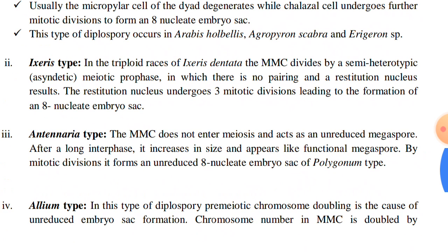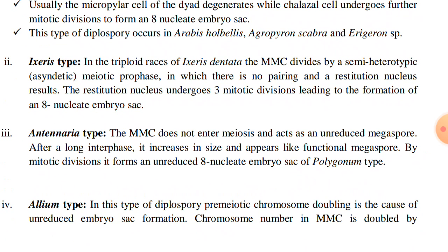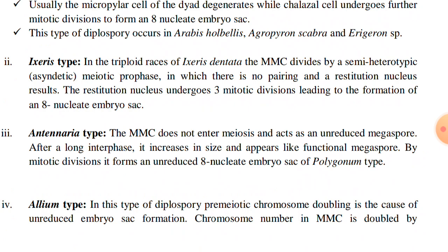The second type is the Ixeris type. In the triploid races of Ixeris dentata, the megaspore mother cell divides by a semi-heterotypic asynaptic meiotic prophase in which there is no pairing and a restitution nucleus results. The restitution nucleus undergoes three mitotic divisions leading to the formation of an 8-nucleate embryo sac.